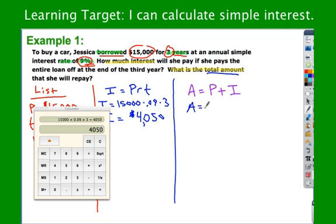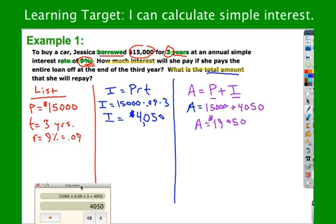And then for the total amount, all I have to do is take what did she borrow in the first place. Remember, she has to pay that $15,000 back. The bank's not just going to say, oh, sure, keep that. She has to give the $15,000 back plus the interest, what she pays the bank for the convenience of using their money. So she owes a total of $19,050. That's what she bought the car for. She didn't buy it for $15,000. So there are my two answers.